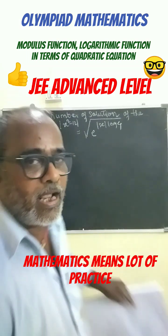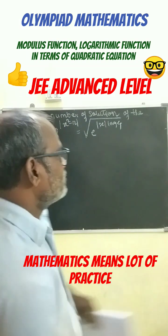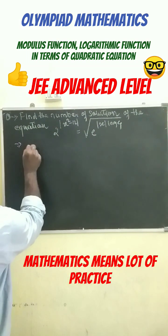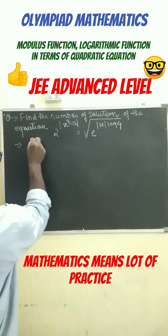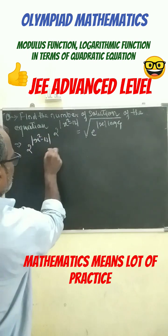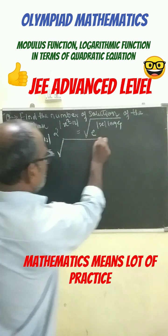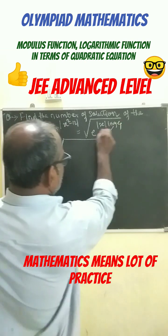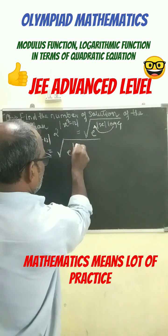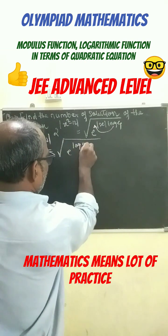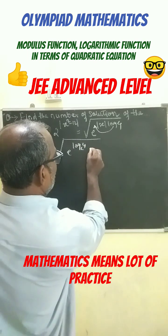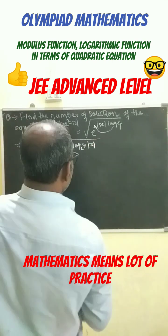This is a question from IIT Advanced. So first let us write down this as 2 to the power of x squared minus 12 equals to root. Now bring this one to this side — we get e to the power of log 4 base e. We can write down here base e mod x.